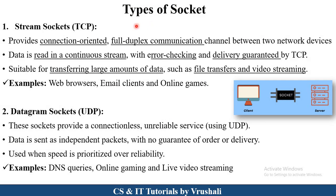The next point is types of socket. In computer networks, there are two types of socket: stream socket and datagram socket. We already discussed TCP and UDP protocols in a previous session. Stream socket provides connection-oriented communication, meaning there is guaranteed delivery — the receiver receives information accurately. Stream socket also provides full-duplex communication, meaning sending and receiving operations are performed at the same time. Stream socket is useful for transferring large amounts of data such as file transfers, video streaming, web browsers, email clients, and online gaming.